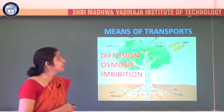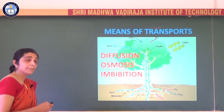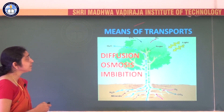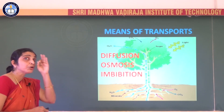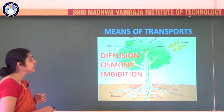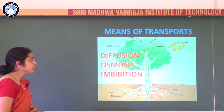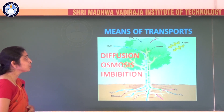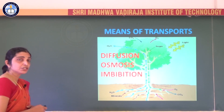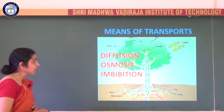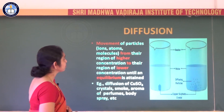Which are the different means of transport when it comes to plants? The different means of transport within the plant — broadly — are diffusion, osmosis, and imbibition. These are the three basic processes or means of transport you get to see within the plant: diffusion, osmosis, and imbibition.